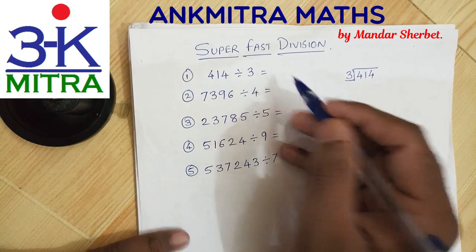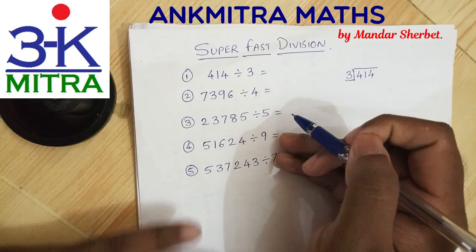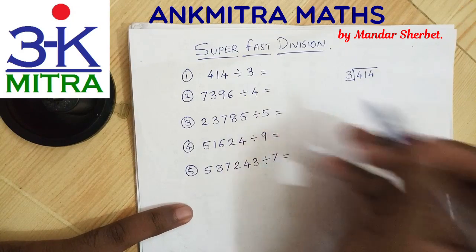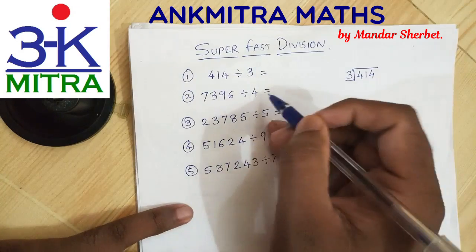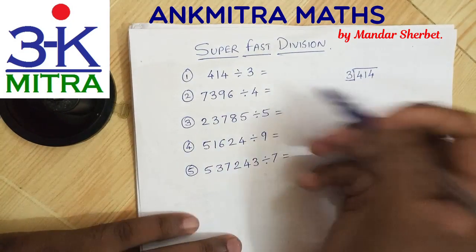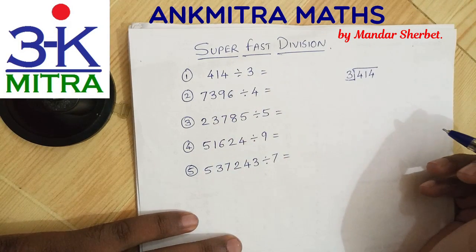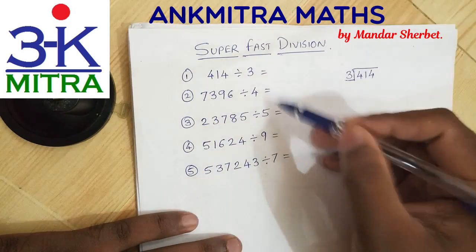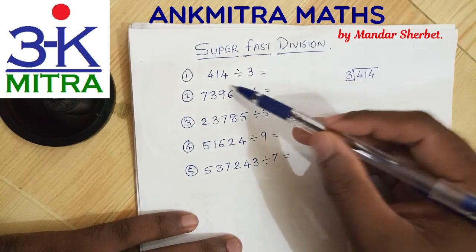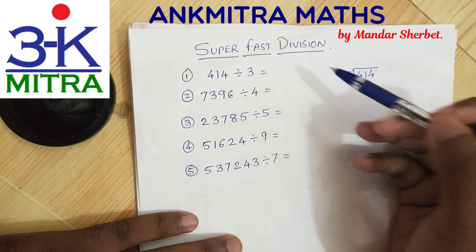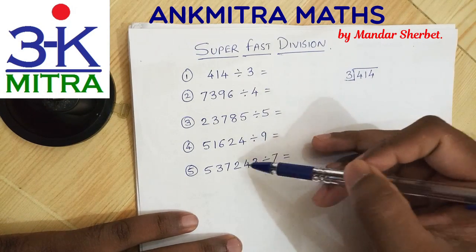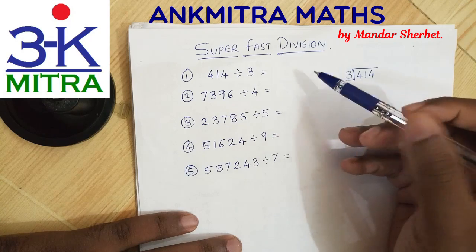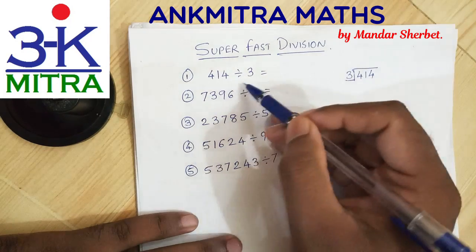Let's start with the method. I have written down five examples here — some are easy, three digits divided by one digit, and some with a little larger numbers. Let's start with the easy ones.